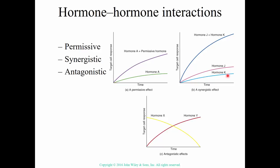A synergistic effect means two hormones - for example, hormone K and hormone J - both do the job, but together their combined response is greater than the sum of their individual responses. FSH and testosterone, or FSH and estrogen, both promote gamete production but do it best when present together. Antagonistic effects mean one hormone increases something and another decreases it - glucagon raises blood glucose level while insulin lowers blood glucose level.